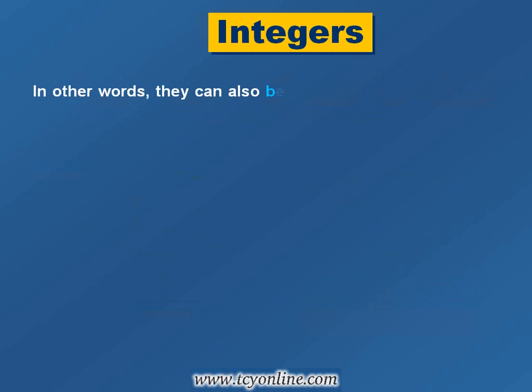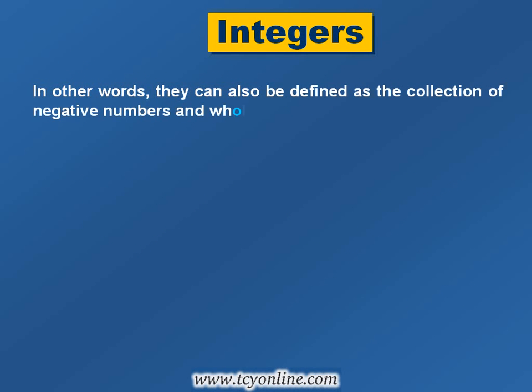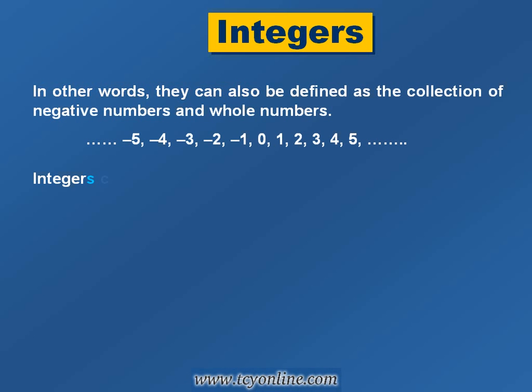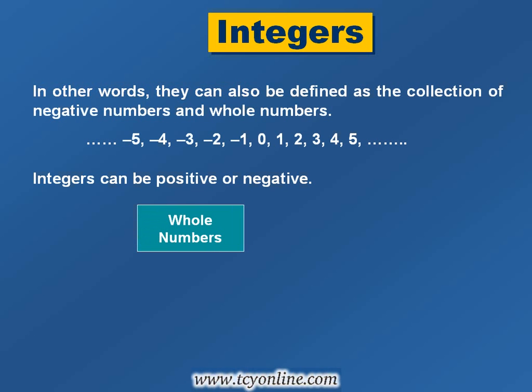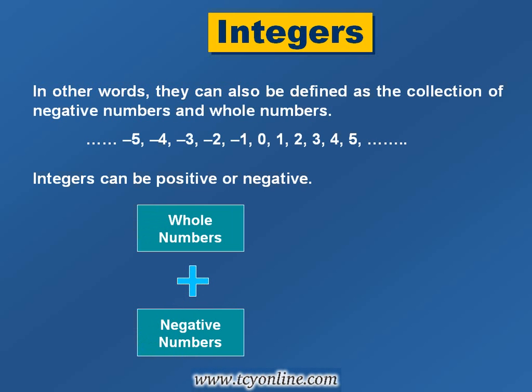Integers can also be defined as the collection of negative numbers and whole numbers. So it should be clear that integers can be positive as well as negative. We can represent this fact as: whole numbers and negative numbers collectively are known as integers.